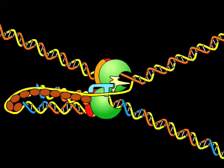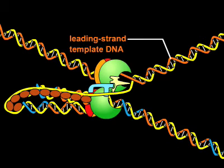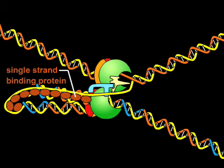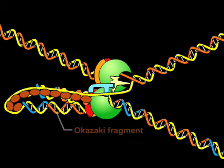In a replication fork, two DNA polymerases collaborate to copy the leading strand template and the lagging strand template DNA. In this picture, the DNA polymerase that produces the lagging strand has just finished an Okazaki fragment.